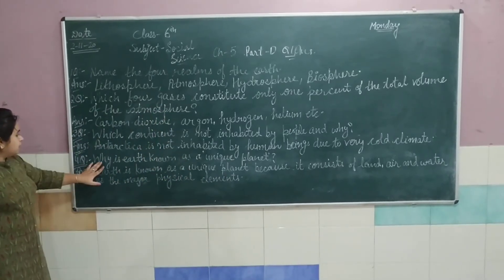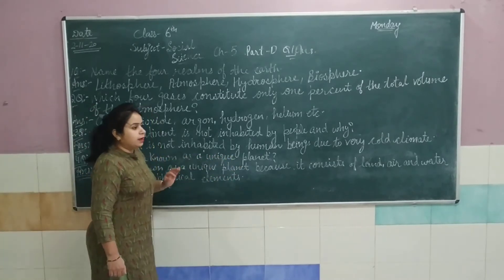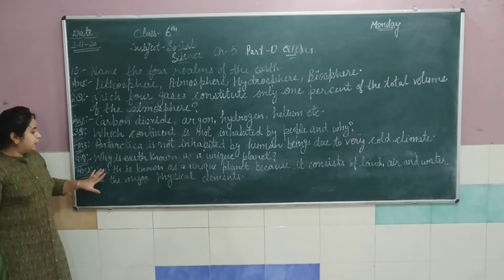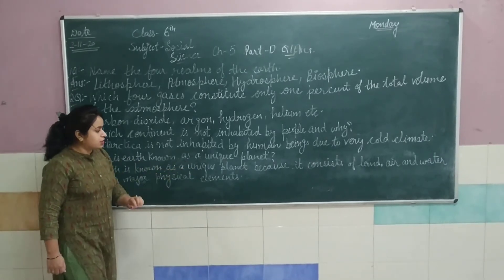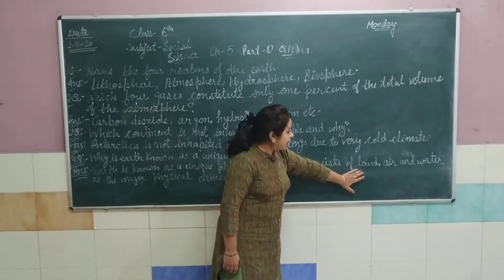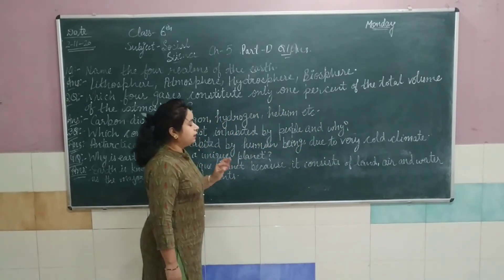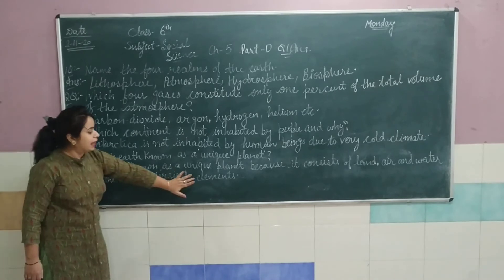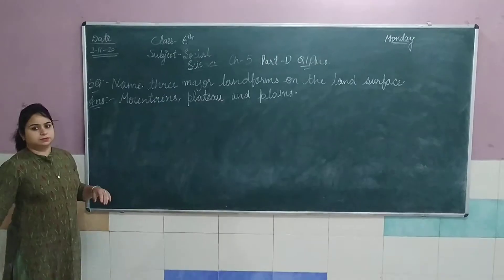Fourth question: why is Earth known as a unique planet? Earth ko hum unique planet kyun bolte hain? Earth is known as a unique planet because it consists of land, air, and water — ismein land, air, and water hain — that are the major physical elements, jo major physical elements hain zindagi ke liye.